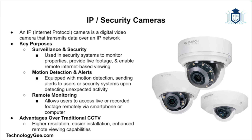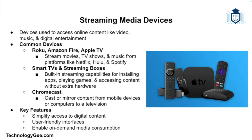Next, let's discuss streaming media devices. A streaming media device is used to access online media content such as video, music, and other digital entertainment. Common devices include Roku, Amazon Firestick, and Apple TV, which allow users to stream movies, TV shows, and music from platforms like Netflix, Hulu, and Spotify. Many televisions today have built-in streaming capabilities. Chromecast allows users to cast or mirror content from a mobile device or computer to a television. Streaming devices simplify access to digital content with easy-to-use interfaces.